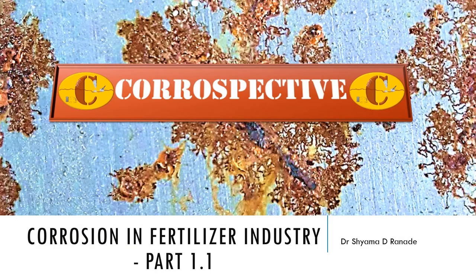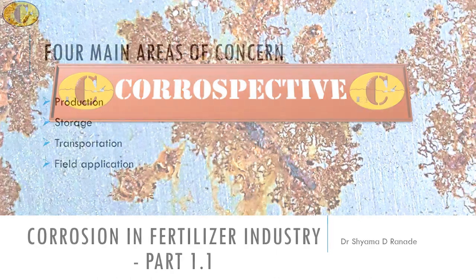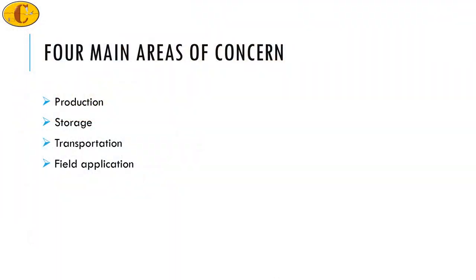Welcome to a new video. This video is part of a series on corrosion in the fertilizer industry. There are four main areas of concern: first is the production of the fertilizer, particularly urea; next is the storage; the third is the transportation; and the fourth is the field application. We will tackle a little bit of each in this series of videos.